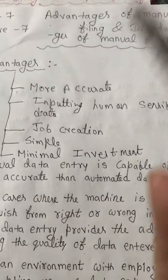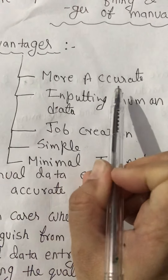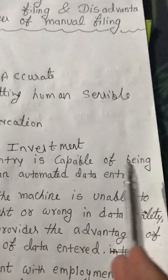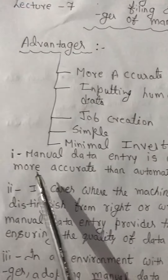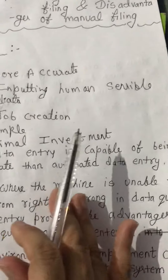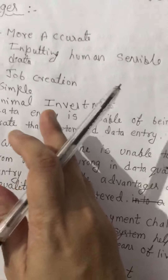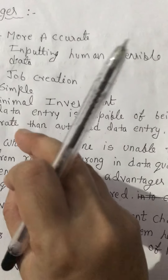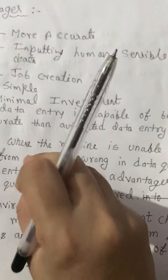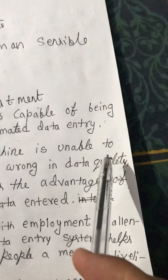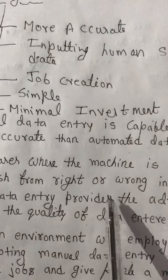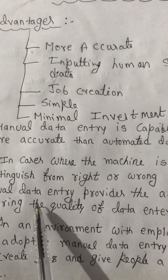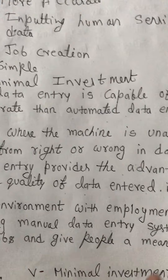Let me explain one by one. First advantage is more accurate. Manual data entry is capable of being more accurate than automated data entry, because of the level of care in handling a specific task. The human data entry operator can recognize and fix errors when spotted. Second is inputting human sensible data. In cases where the machine is unable to distinguish right from wrong in data quality, manual data entry provides the advantage of ensuring the quality of data entered.